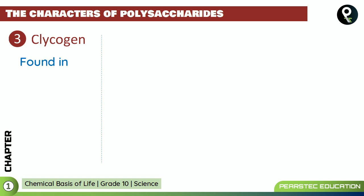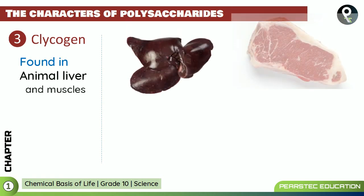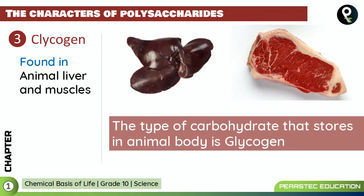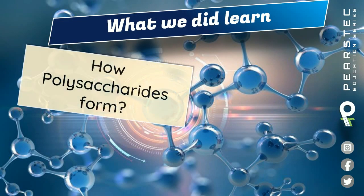The third type is glycogen. Glycogen is found in the animal liver and muscles. The type of carbohydrate that is stored in the animal body is glycogen. This is an important exam point — remember: carbohydrates stored in the animal body is glycogen.